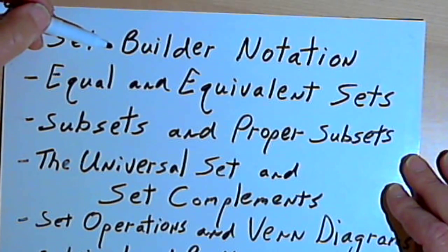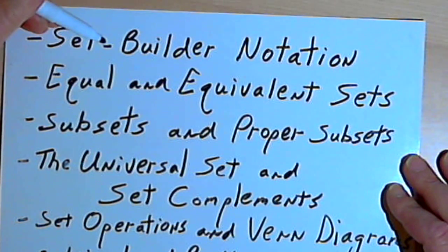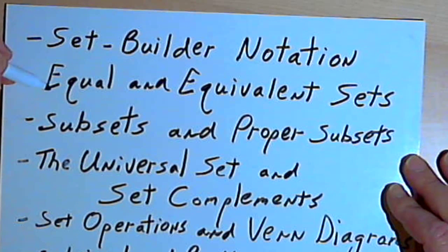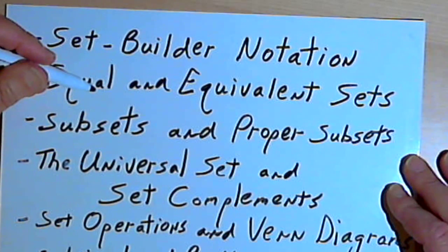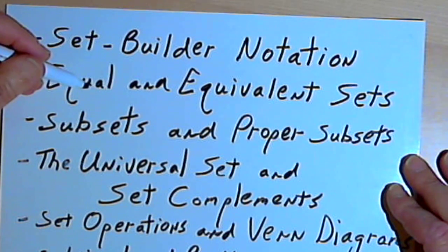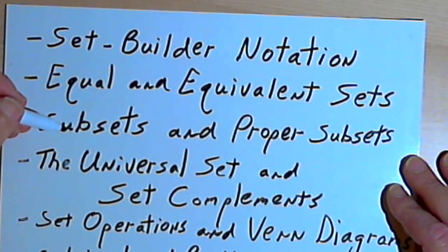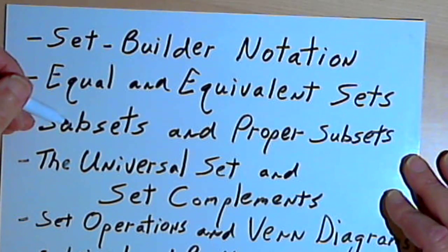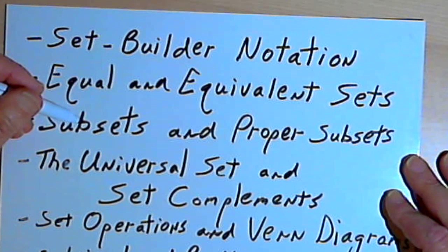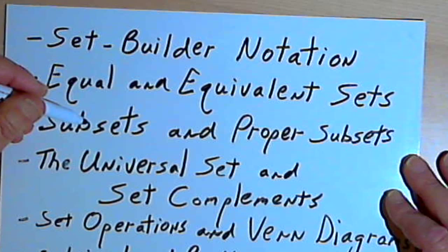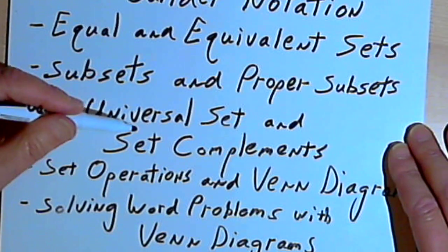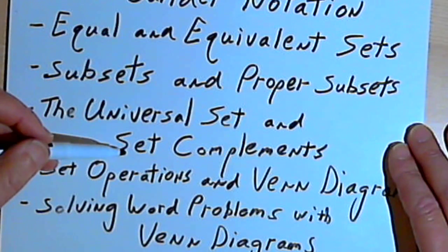After this I'm going to go on to something called set-builder notation, which is an alternate way of describing sets. Then I'm going to go on to something called equal and equivalent sets, ways to compare two sets. I'm going to talk about subsets and proper subsets. So this would be like if your universe that you were talking about was a school, then all the students in biology might be a subset of that universe.